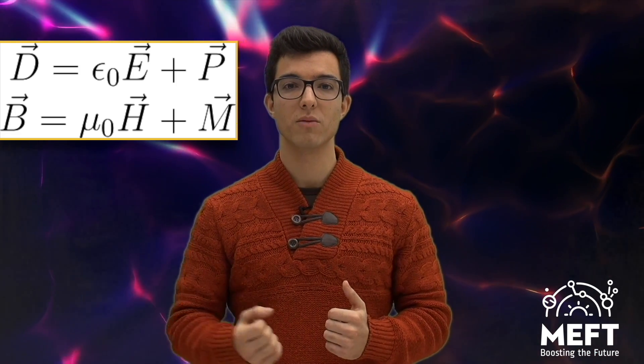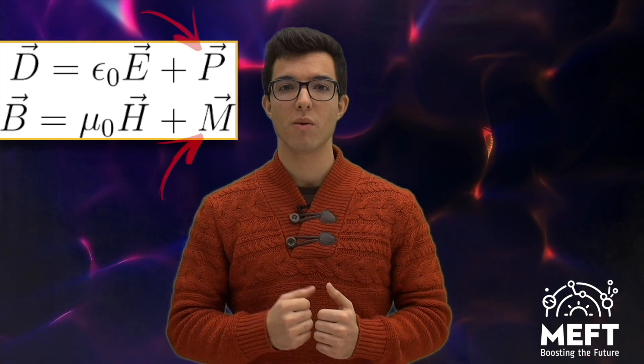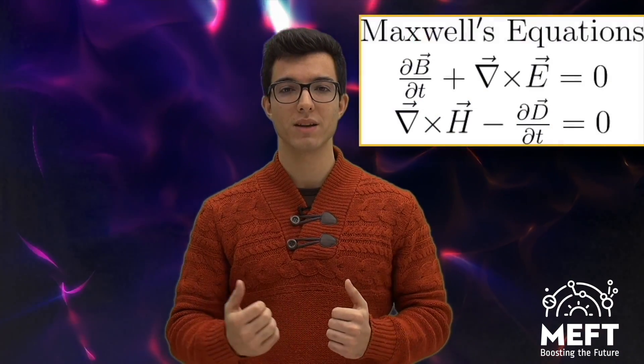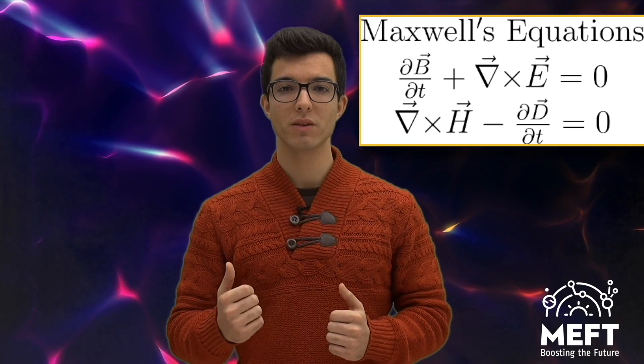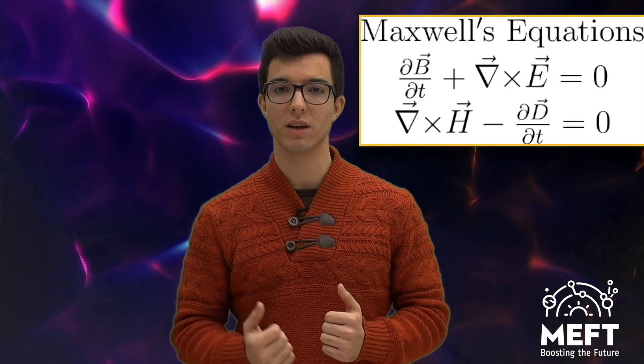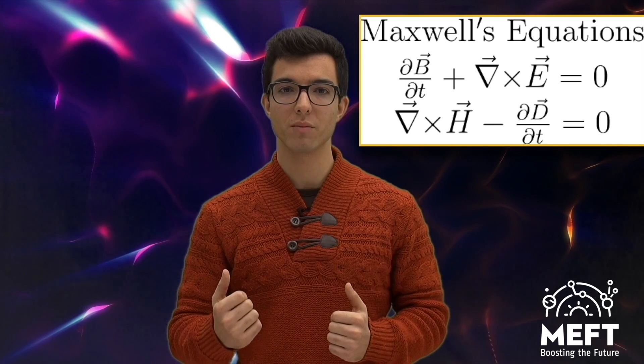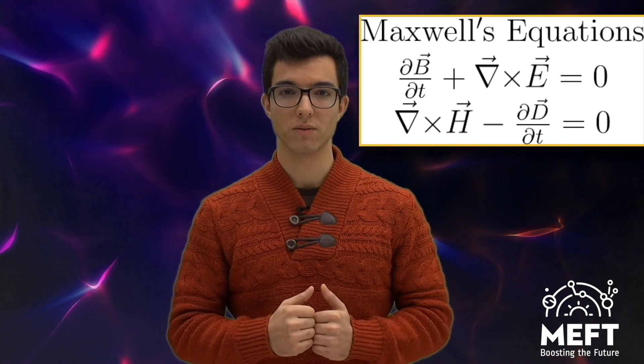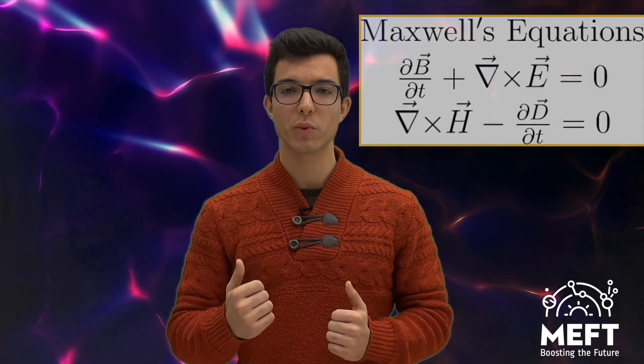One can see that the classical vacuum is represented by the case where these new terms are zero, and so we recover the standard Maxwell's equations. These modifications lead to the conclusion that quantum vacuum behaves like a medium, different from the classical vacuum as we are used to, modifying the way that light propagates in it. And this effect is called vacuum birefringence.